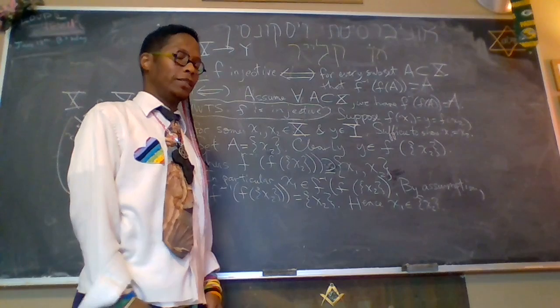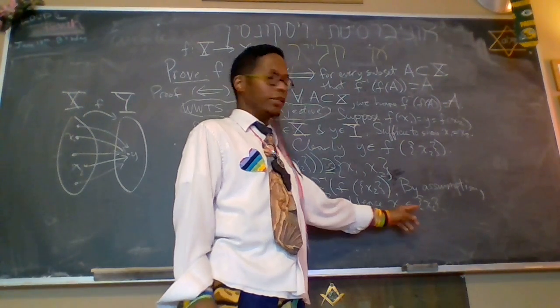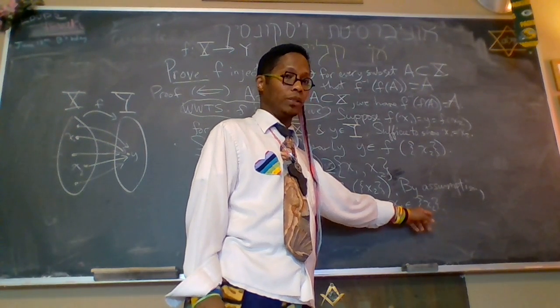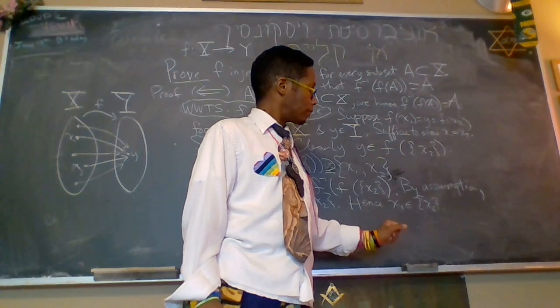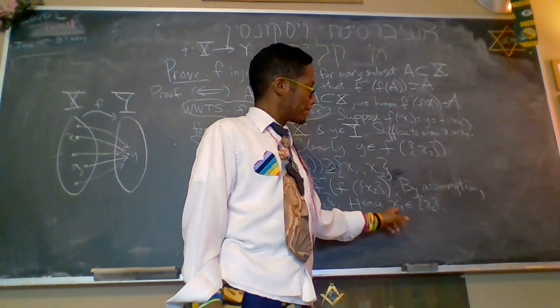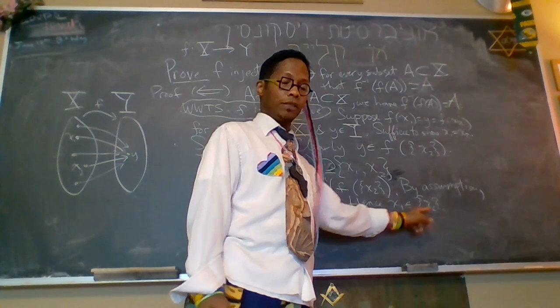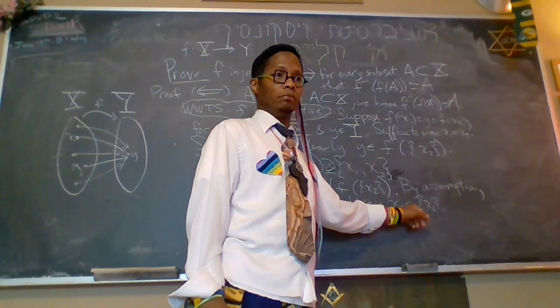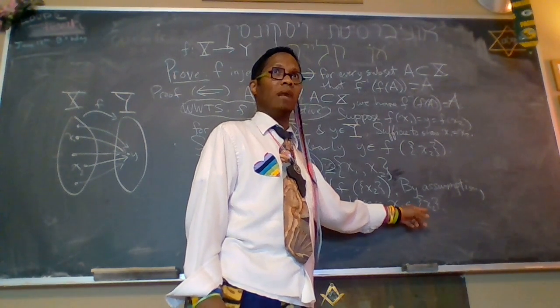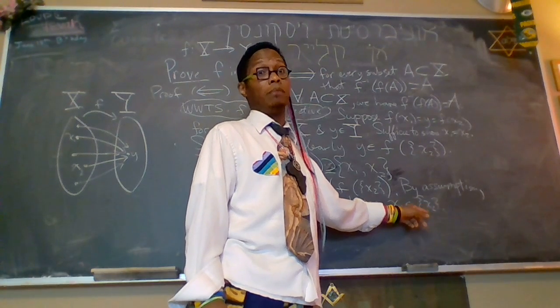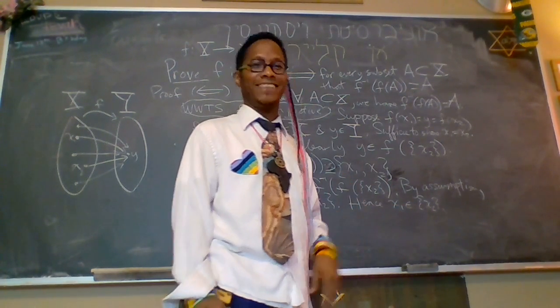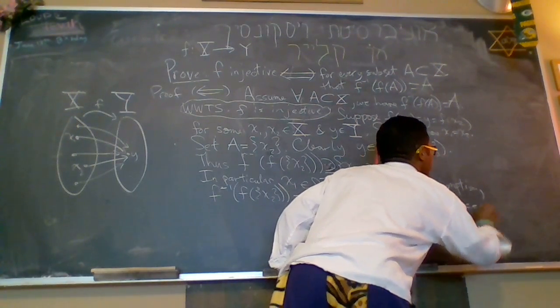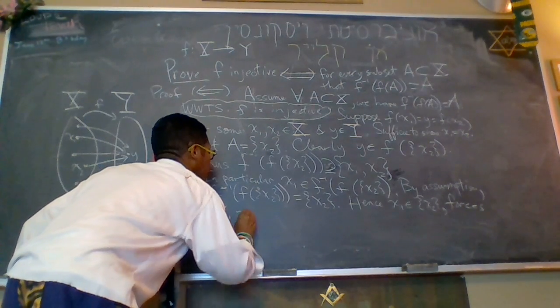Hmm. You might say to yourself. X1 is an element of the set that only contains one element. And that one element is called x2. That's like saying, Bob lives in a house. And the house, there's only one person that lives there. And that's like Abba. So, if Bob lives in a house and only Abba lives in that house, then Bob must be Abba. But I'm not Bob. That's a joke. I'm Abba. Okay. In any case, this forces x1 to be equal to x2.